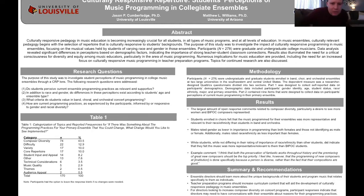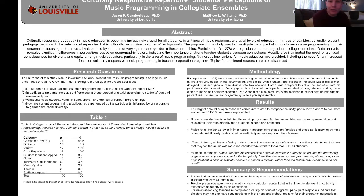Participants were asked if there was something about the programming practices for their primary ensemble that they could change — and if so, what would it be? As you can see in table one, composer diversity is the number one topic that would be changed. 43% of respondents indicated that there should be more composer diversity in programs. Difficulty level as it relates to the ability level of the ensemble was the second category. Others included variety, core repertoire, audience appeal, and thematic material.